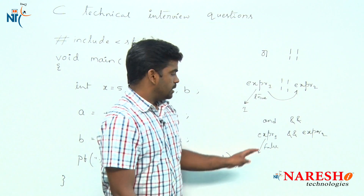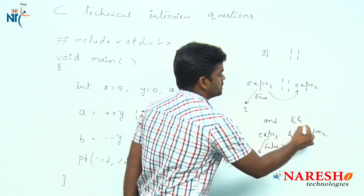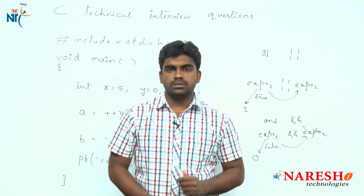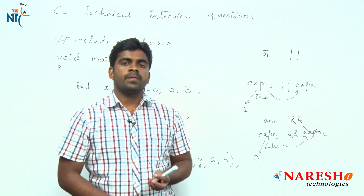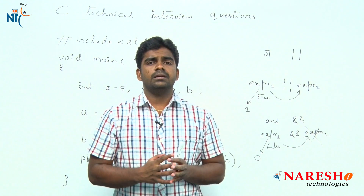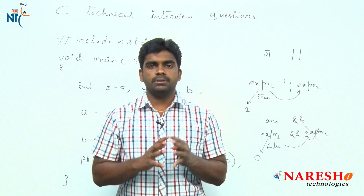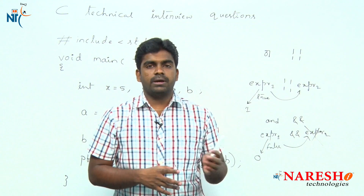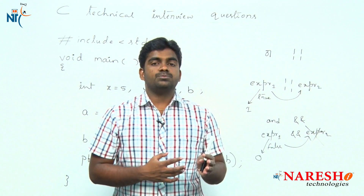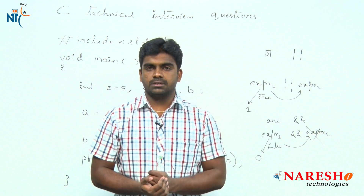If the first expression is false, it directly returns zero and will not go and check the remaining expressions. This is how logical AND and logical OR operators execute. The compiler is designed this way for fast execution — it will not unnecessarily evaluate all expressions. Whenever it is possible to return a value, it will return and stop evaluation of the instruction.